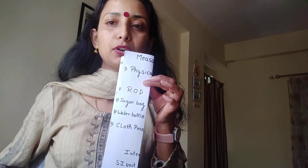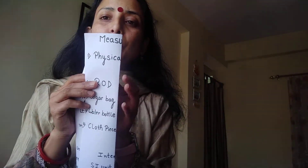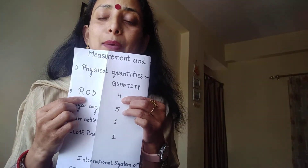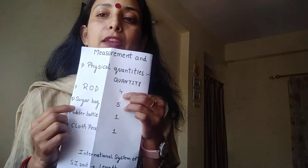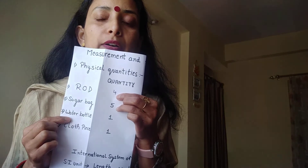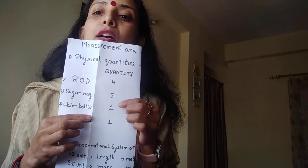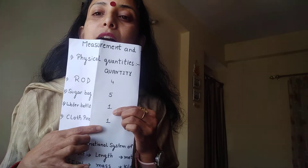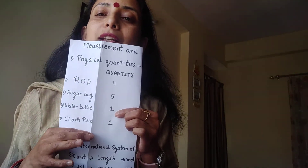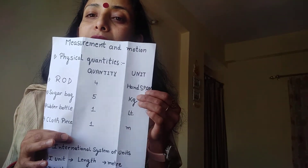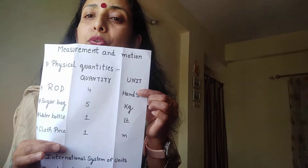Now imagine I say this rod has a quantity of four — that means I am having four rods. If I talk about a sugar bag with quantity five, it means I have five sugar bags. A water bottle with quantity one means I have about one water bottle. A piece of cloth means I have a piece of cloth. But if I compare it with a known fixed physical quantity — what we call a unit — then it gives it a meaningful value.